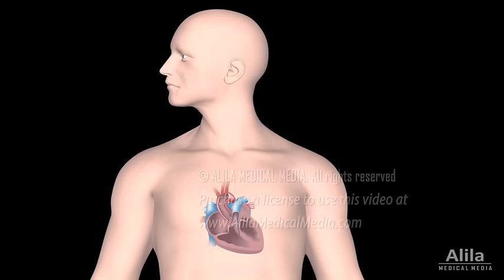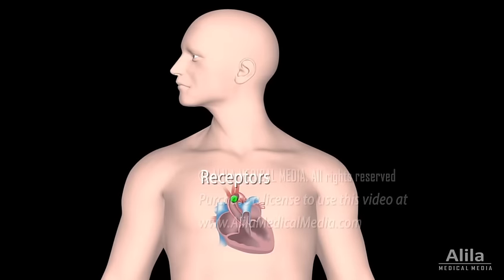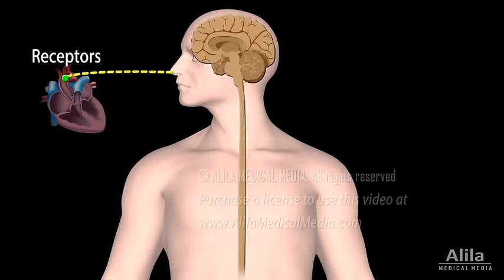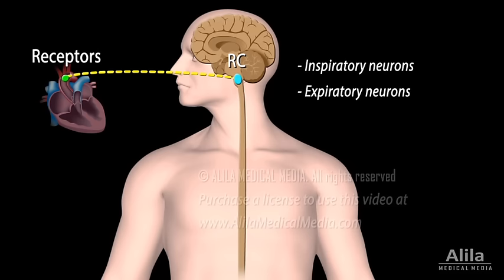Basically, various receptors in the body feed information about its metabolic state to the respiratory center in the brainstem, which responds by changing the firing pattern of inspiratory and expiratory neurons. Inspiratory neurons fire during inspiration, while expiratory neurons only fire during deep expiration, since quiet expiration is a passive process.